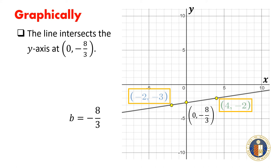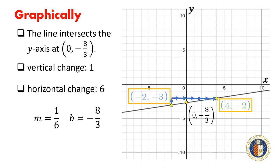We would have to move one unit up and 6 units to the right. This verifies that the vertical change would be 1 and the horizontal change would be 6, giving us a slope of 1/6.